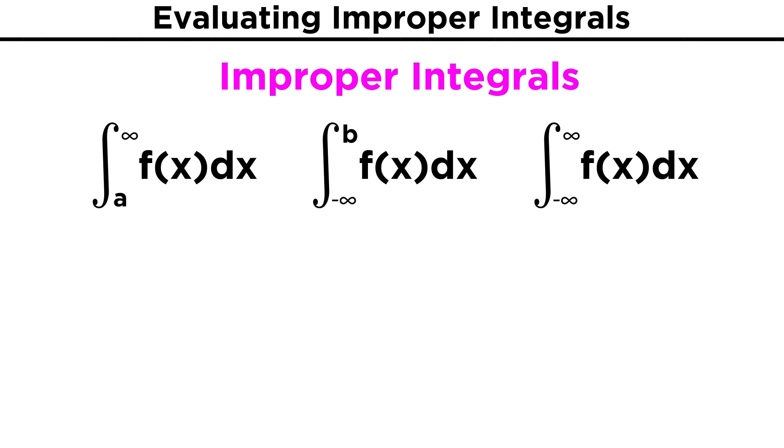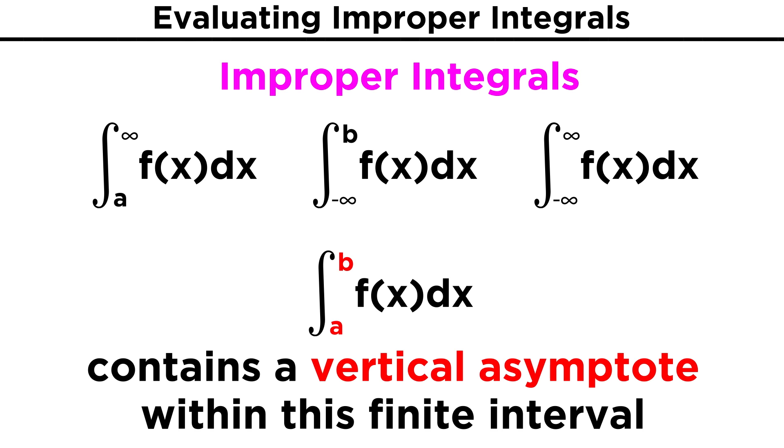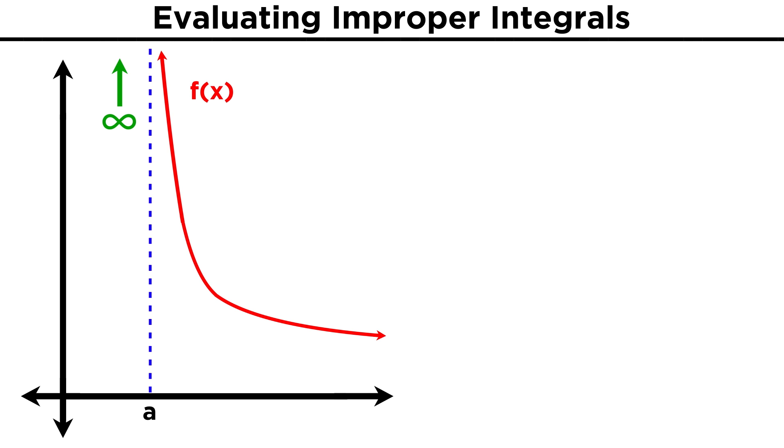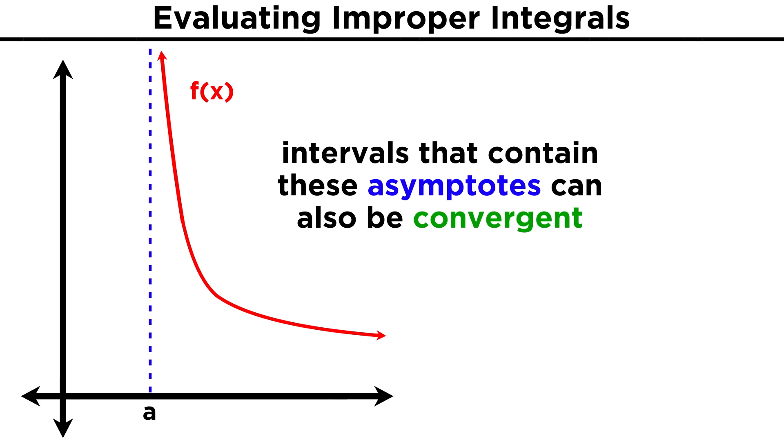So integrating over an infinite interval is one way we can get an improper integral. There is another way that involves finite intervals, and this will be when there is some vertical asymptote within the interval. This allows the curve to extend to infinity, not in the horizontal direction but in the vertical direction, and we might not be too surprised by now to find out that this circumstance can also yield a convergent integral with a finite value.